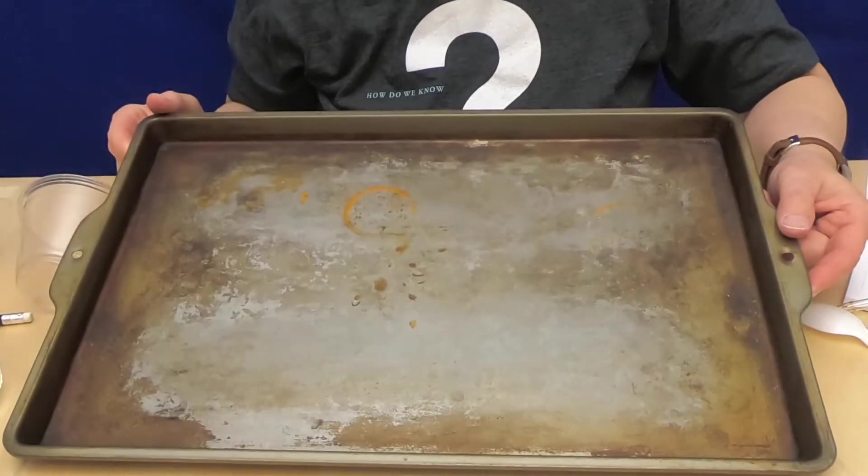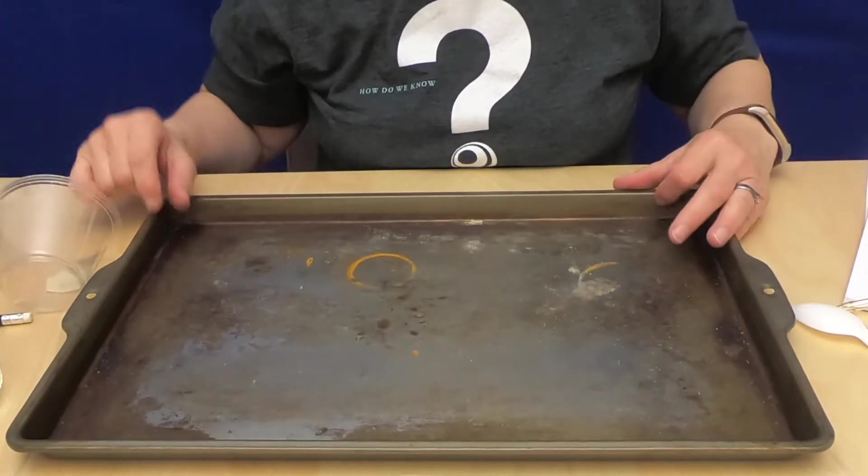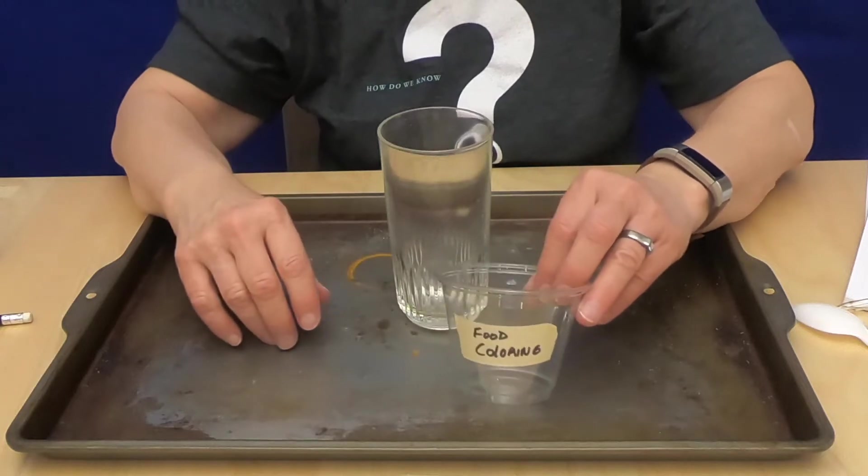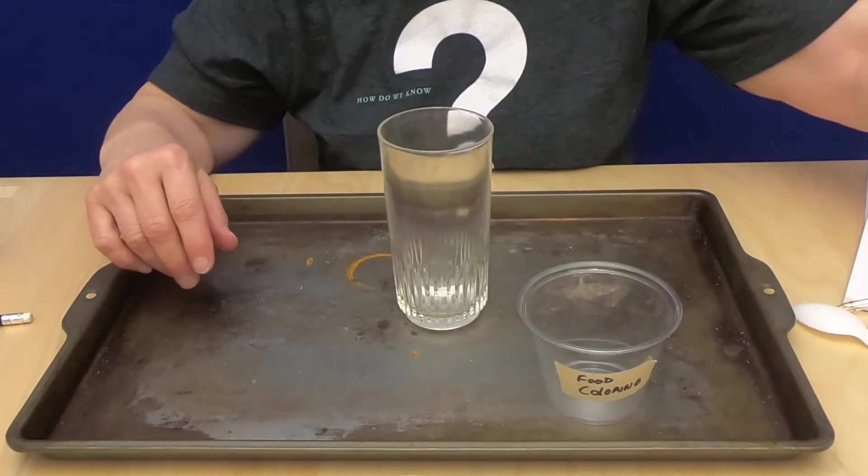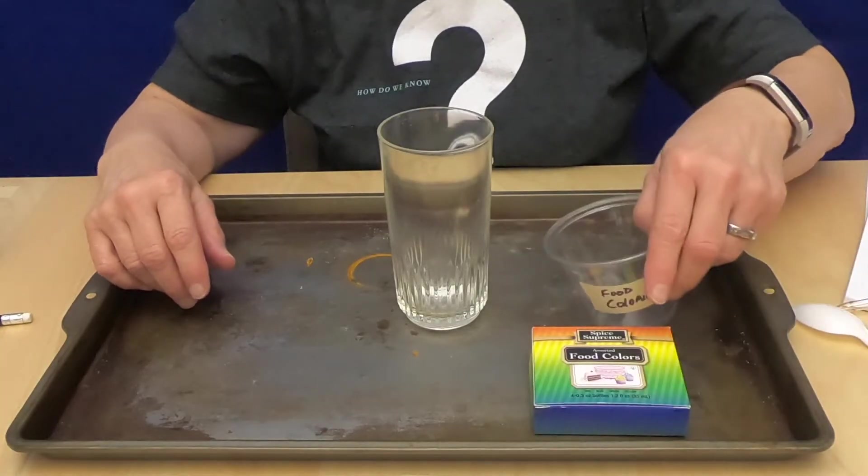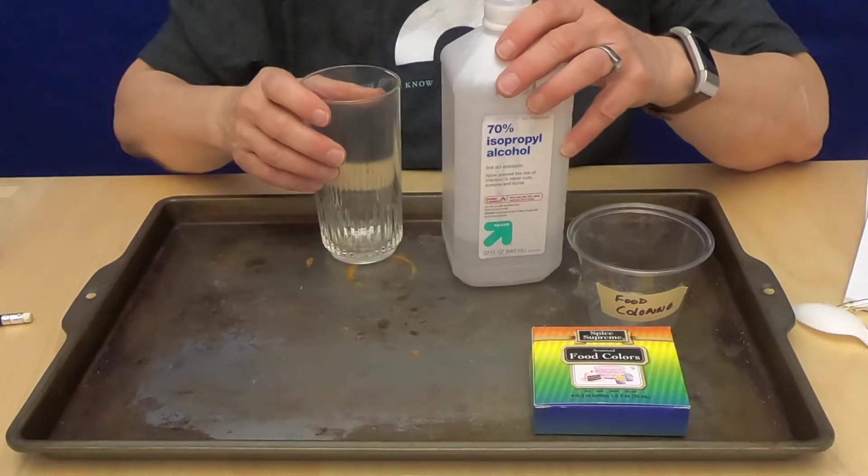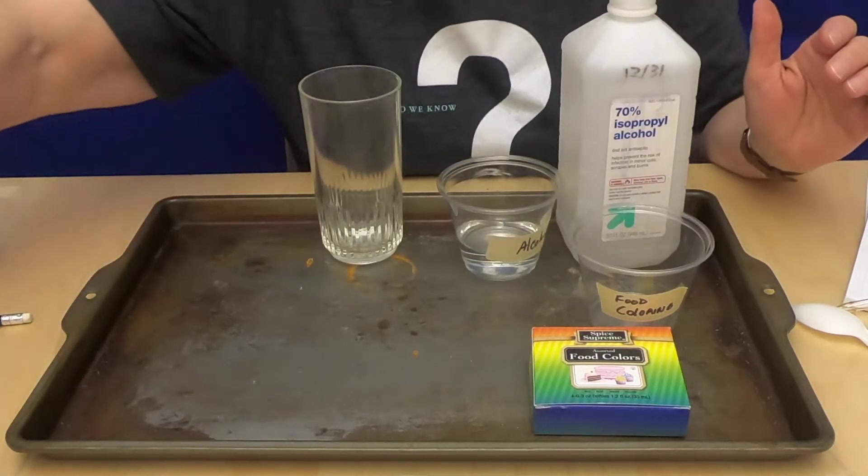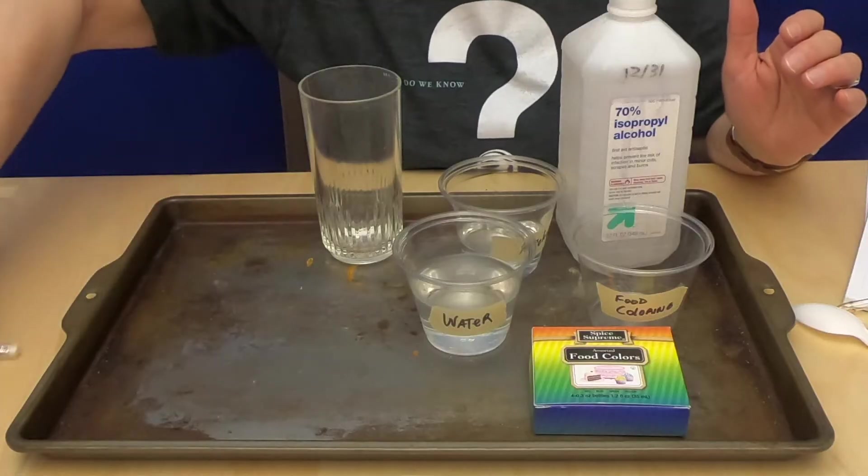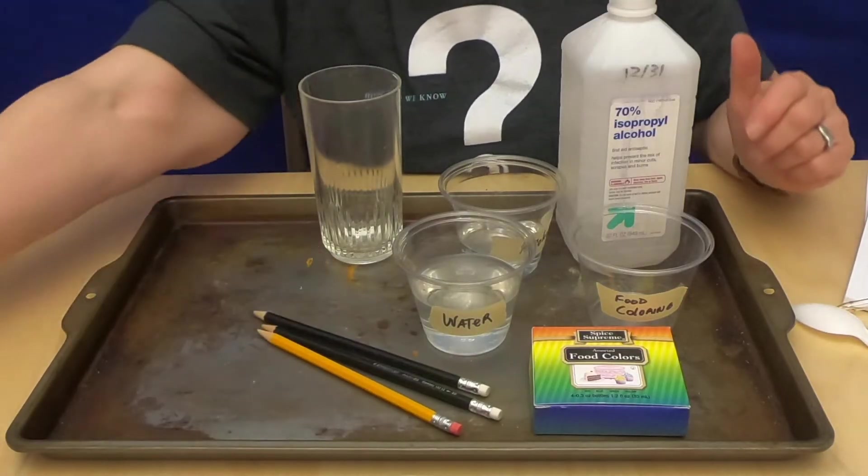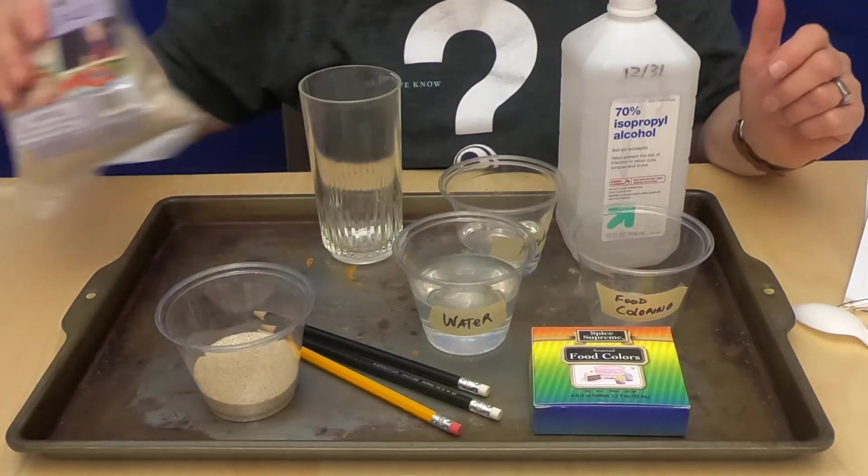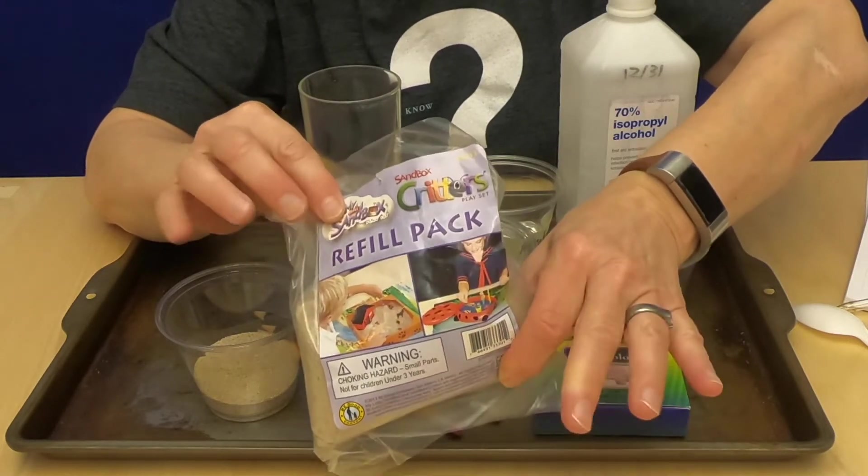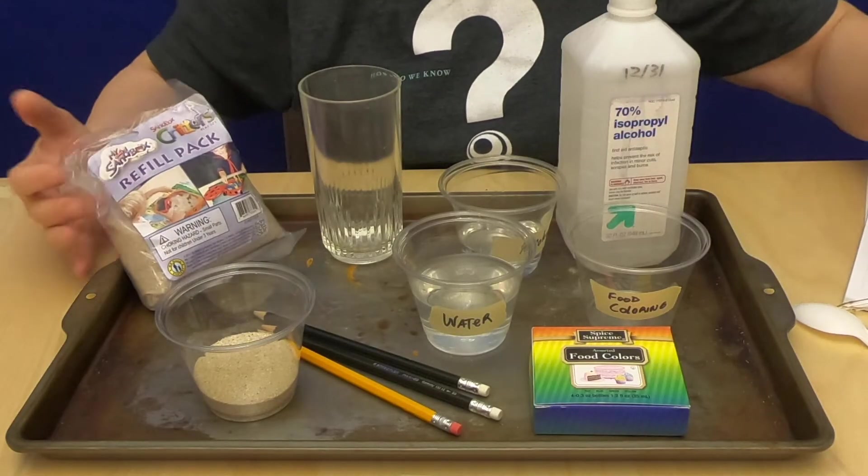To get started I have a cookie sheet, a tall soda glass, four eight-ounce plastic cups labeled for food coloring mixture, 70% alcohol, and tap water. I need three pencils and some sand. As I mentioned it needs to be toddler sand - clean, very fine, not mixed with anything, so the toddler sand works great.